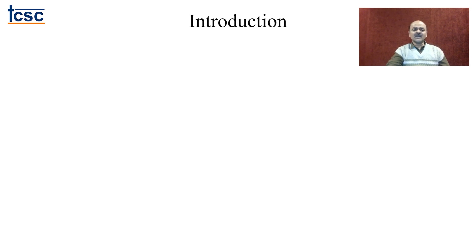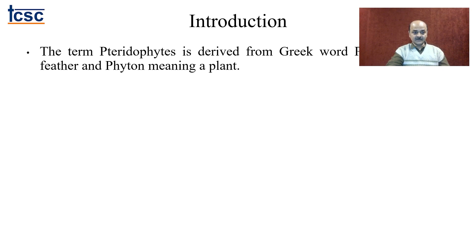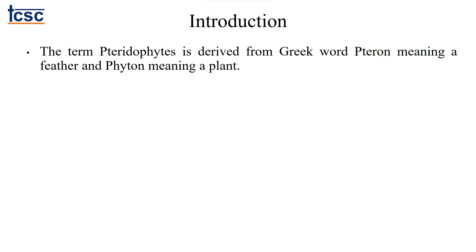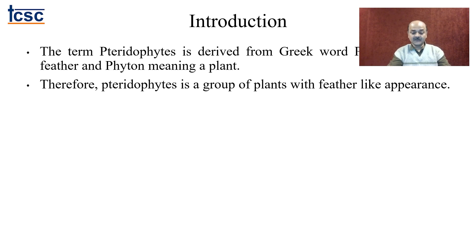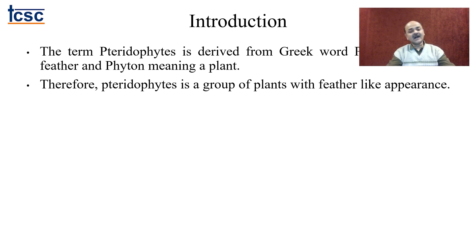The term pteridophytes is derived from a Greek word — tyron means a feather and phyton means a plant — and that is how the word pteridophyta has been derived. Therefore pteridophytes is a group of plants with feather-like appearance. It is not compulsory that all plants have this appearance, but in general about 90% of plants in this group give you that appearance, and that is why the name has been given. There is a long history for this group of plants and we are going to study their characteristic features and classification.